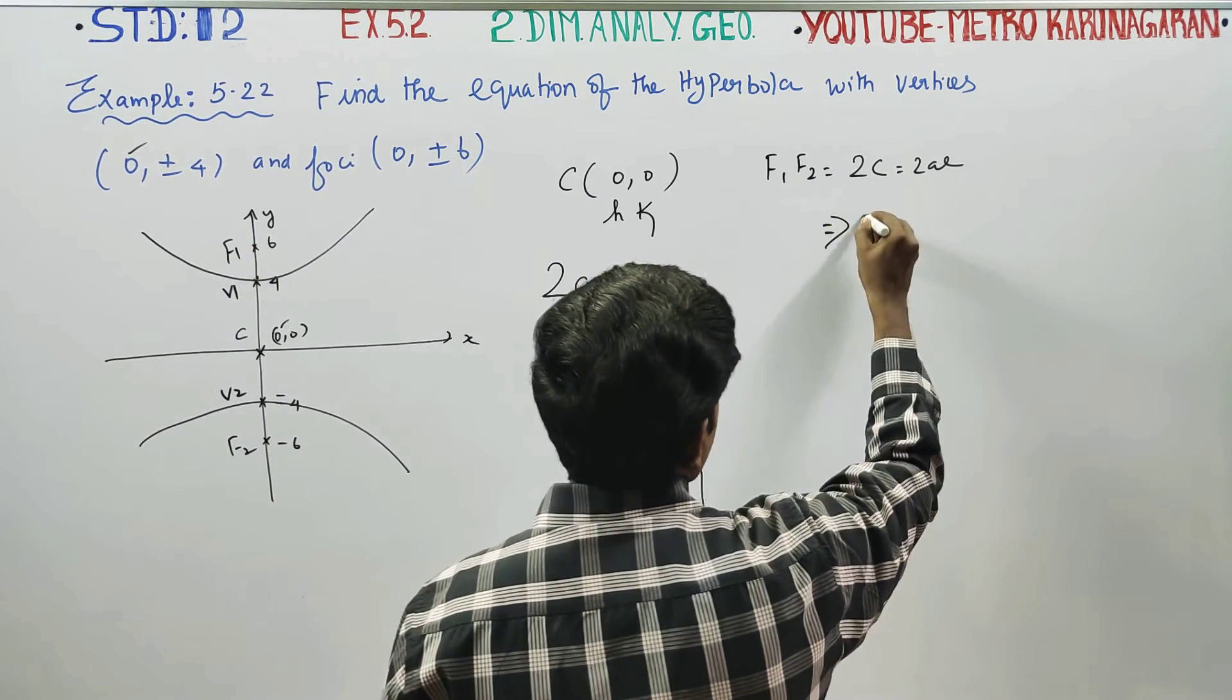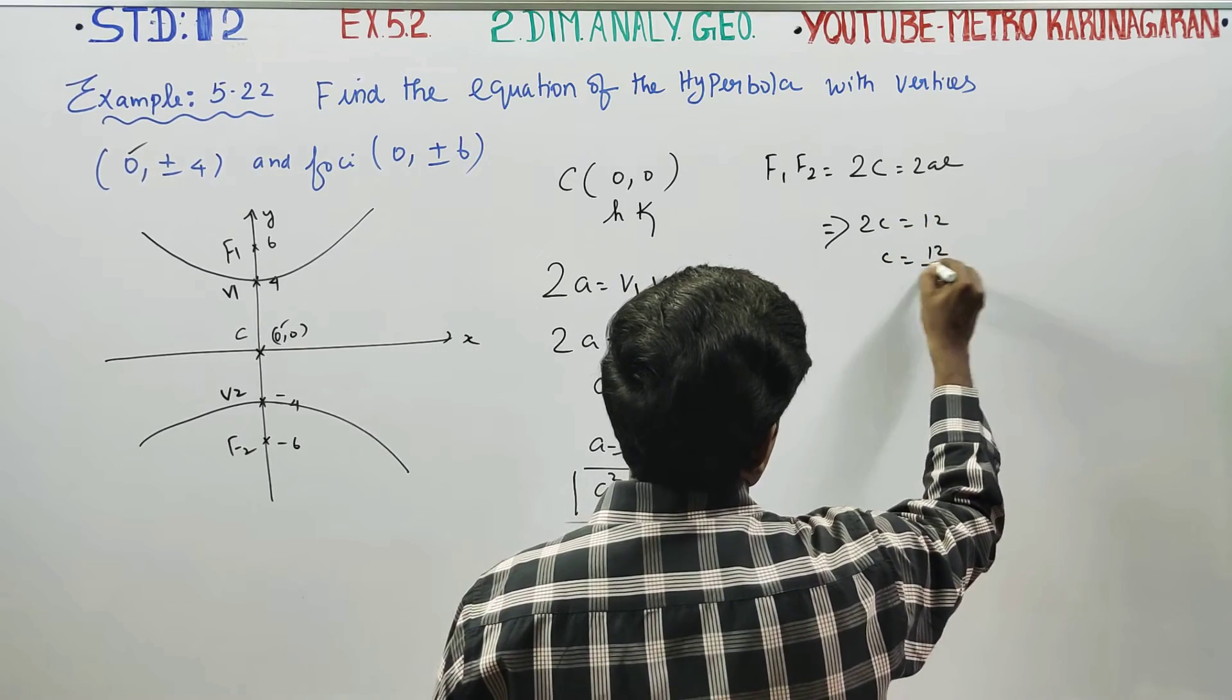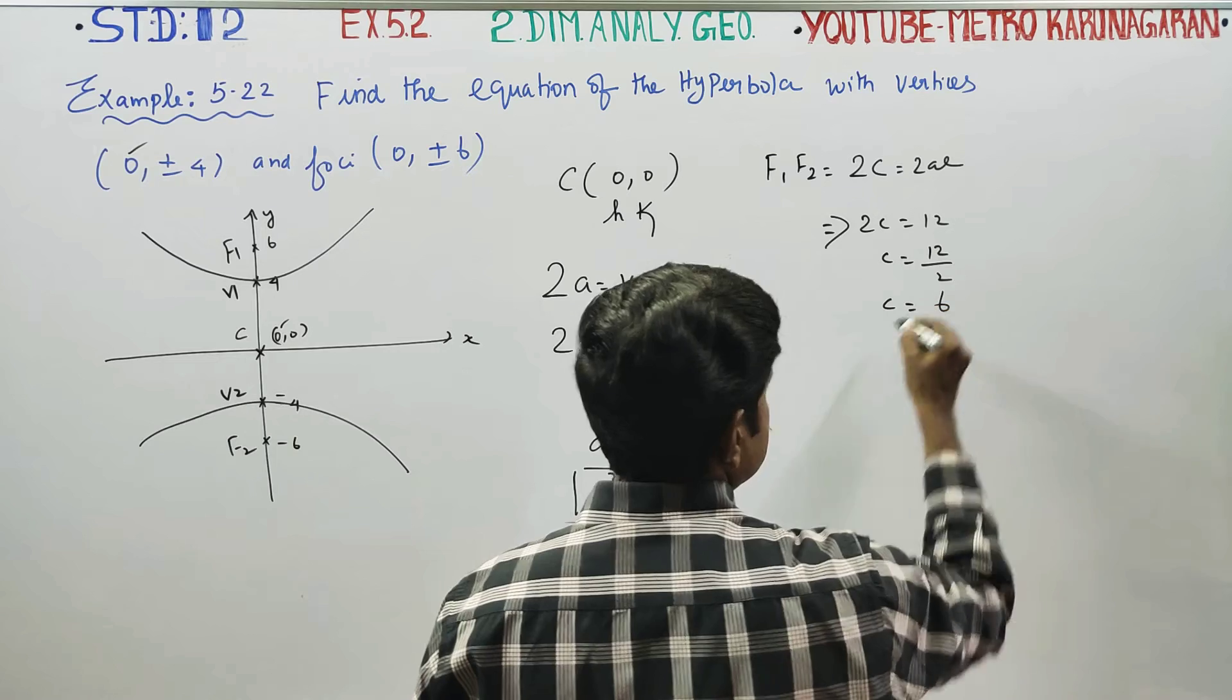2C is equal to 12. Now, C is equal to 12 by 2. You will be getting C is equal to 6.